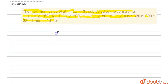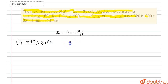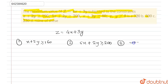We have to find the maximum value of Z equals 4x plus 3y. We have three equations: first, x plus 2y ≥ 160; second, 5x plus 2y ≥ 200; third, x plus 2y ≥ 80. Since x, y ≥ 0, the curve will be lying in the first quadrant.